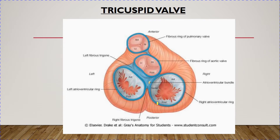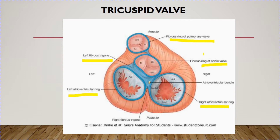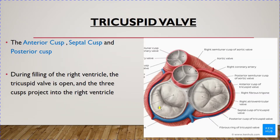In this figure, you can see the fibrous trigone and the fibrous skeleton — the blue-colored structure. This fibrous ring encircles the atrioventricular valves on both the right and left sides, and also encircles the aortic valve and the pulmonary valve. It is made up of thick fibrous connective tissue, which holds the cusps of the tricuspid valve as well as the aortic valve.